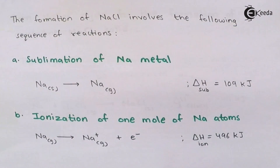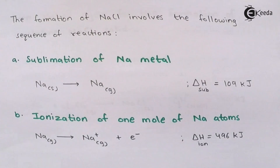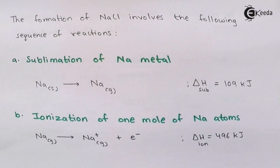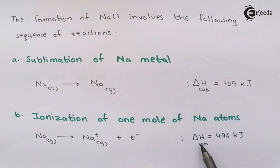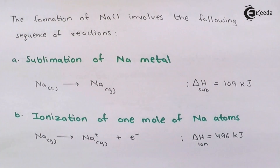Step B: Ionization of sodium. Once gaseous sodium atoms are produced, we have to ionize them to form sodium ions. This process — removing an electron from a gaseous sodium atom — is known as ionization. The energy required is the ionization enthalpy, ΔH_IE = +496 kJ, meaning 496 kJ of energy is required to remove an electron from a gaseous sodium atom.